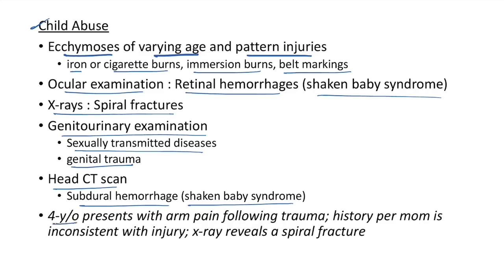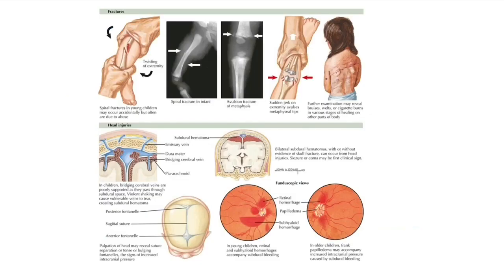Clinical case of child abuse: four-year-old presents with arm pain following trauma; history is inconsistent with injury. X-ray reveals a spiral fracture. In children, the bridging cerebral veins are poorly supported as they pass through the subdural space, so violent shaking may cause subdural hematoma. These are the pictures of child abuse showing retinal hemorrhages.